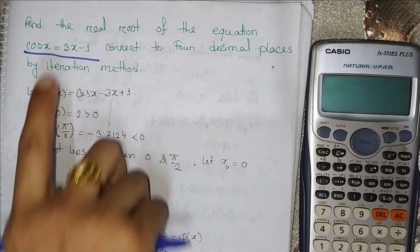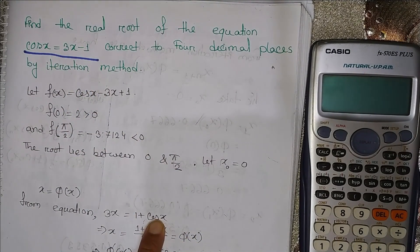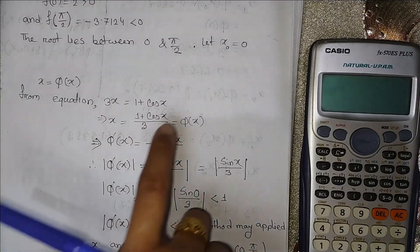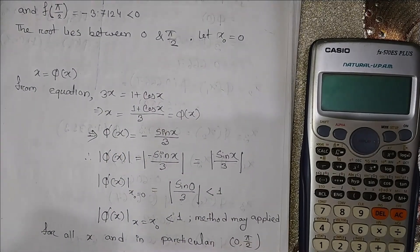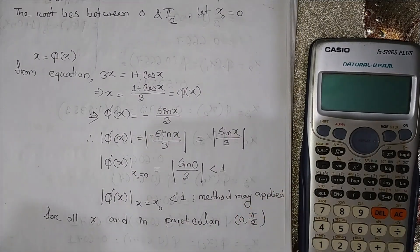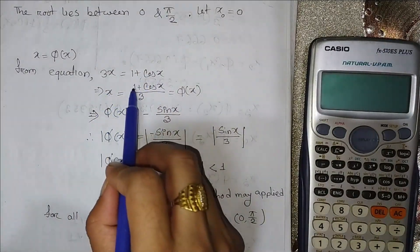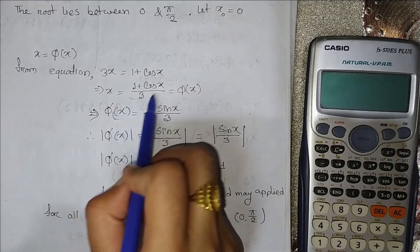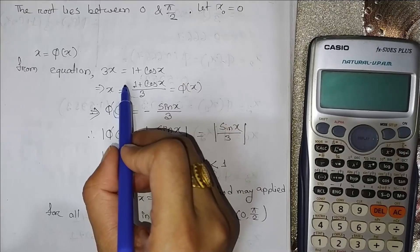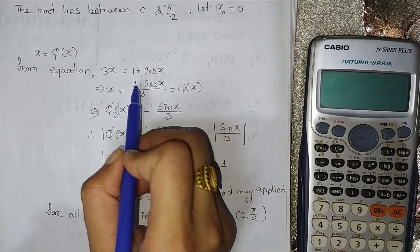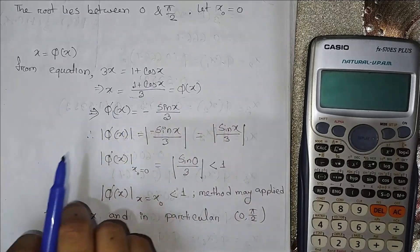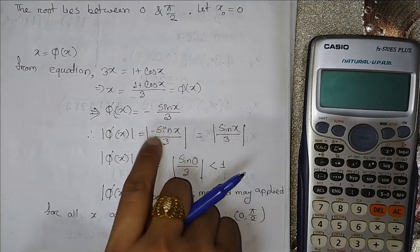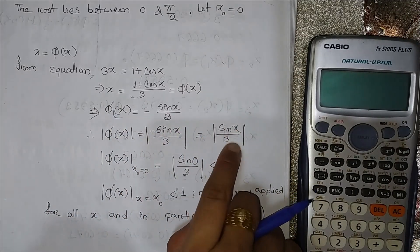We have 3x equal to 1 plus cos(x). Here we have a condition: phi'(x) must have a small value. We define x = phi(x) = (1 + cos(x)) / 3. Now phi prime of x is the derivative. The derivative of cos(x) is sin(x), so phi prime of x equals sin(x) divided by 3.